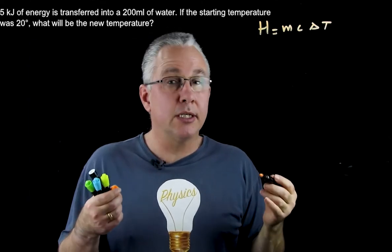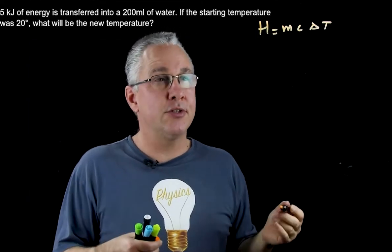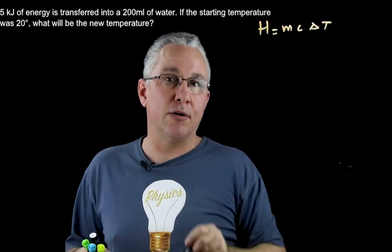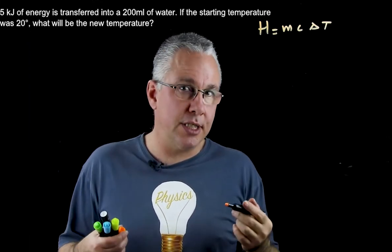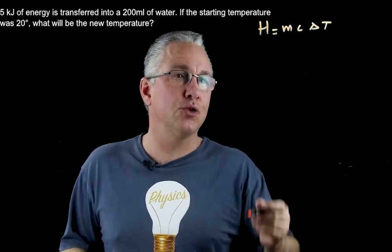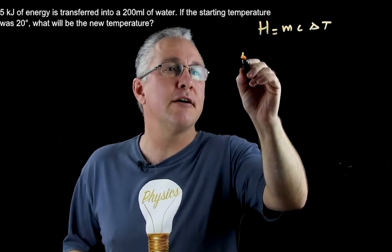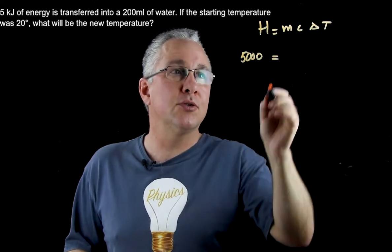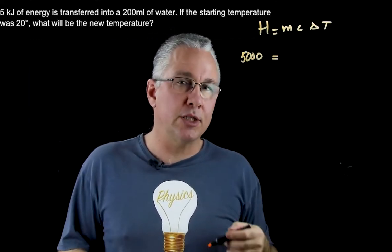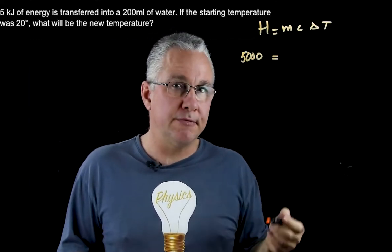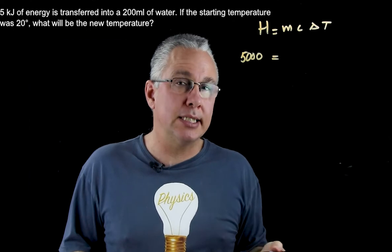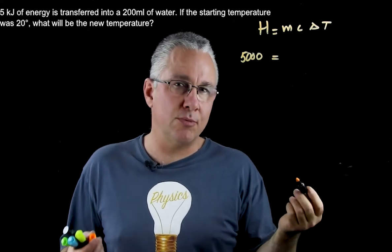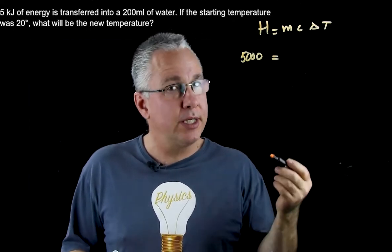I'm going to be using the correct SI units throughout. Our H is 5 kilojoules, but that's 5000 joules. That is equal to the mass multiplied by the specific heat capacity of water multiplied by delta T, and that's what we're looking for.